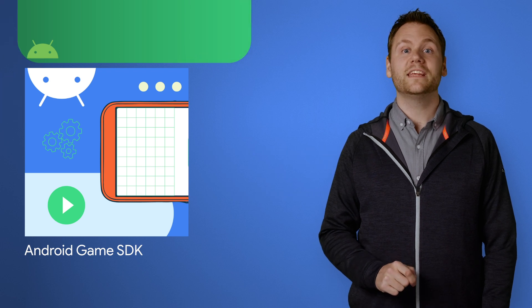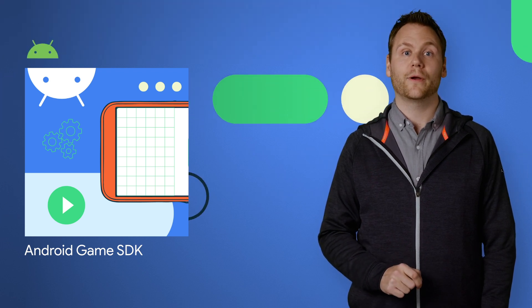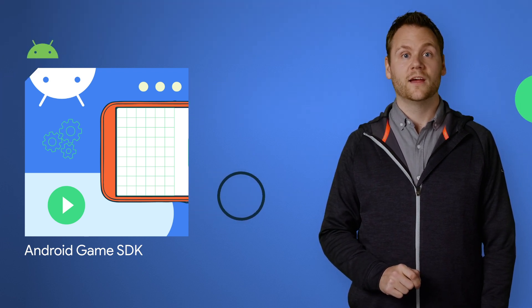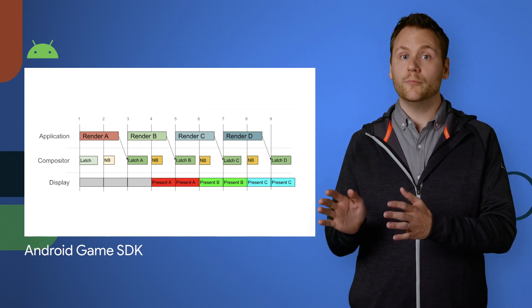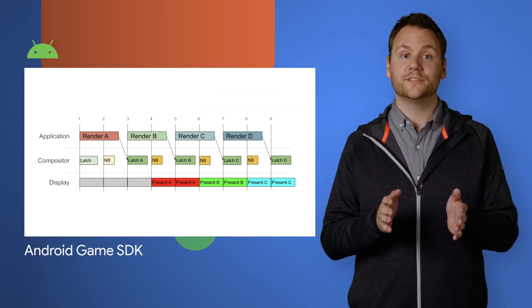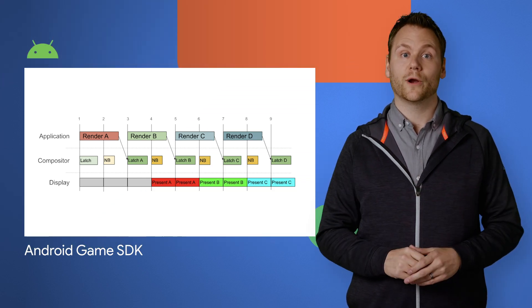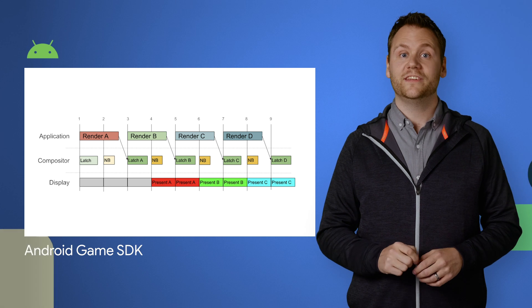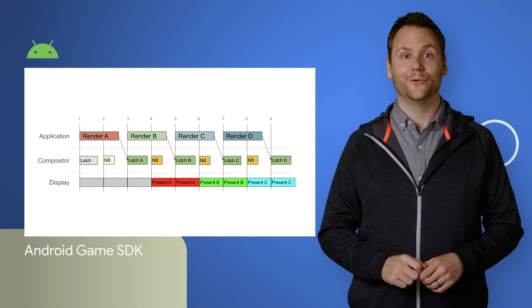The Android Game SDK is launching its first library, helping developers with frame pacing — the synchronization of a game's rendering loop with the display subsystem and the underlying display hardware. More details and a link to the documentation are on the post.